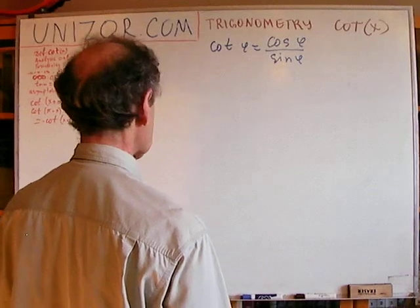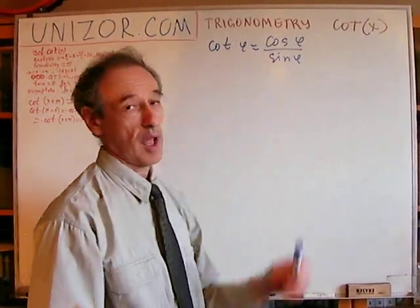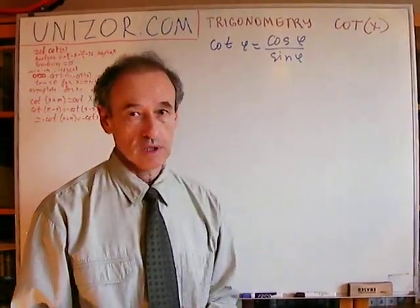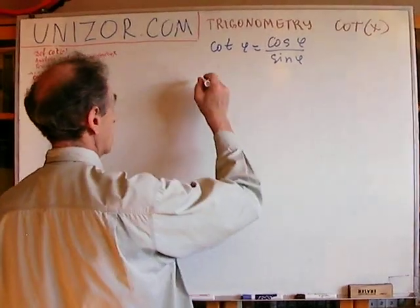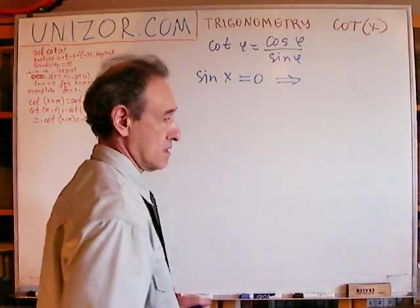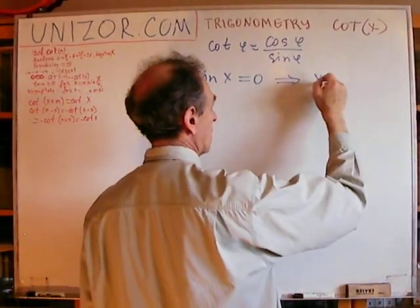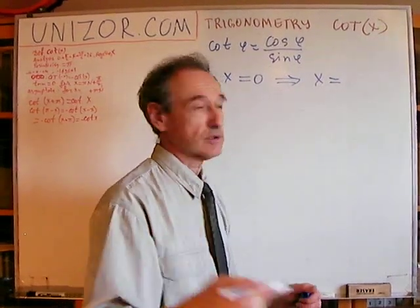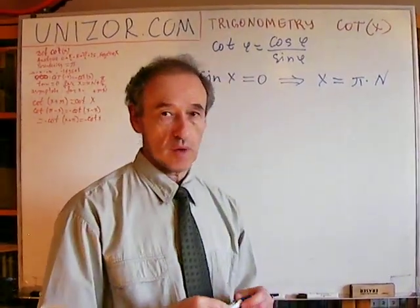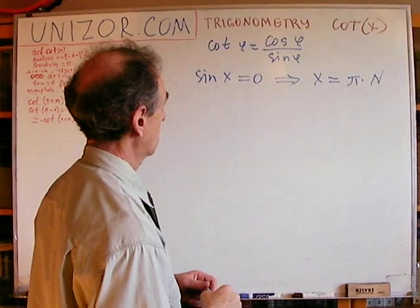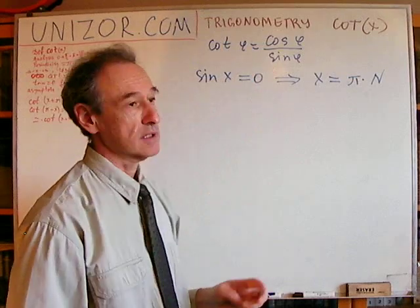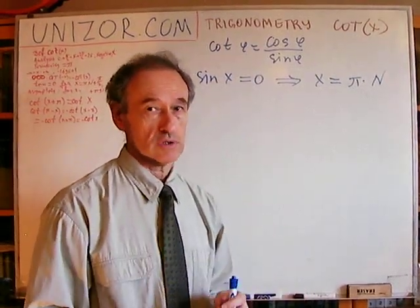Next, what strikes the eye is denominator, obviously, which means that the function is not defined where the denominator equals zero. Now, if sine of x equals zero, then x, if you remember, is zero, π, 2π, 3π, etc., so it's π times n, where n is any integer number, including zero and negative numbers as well. So, these are the points where our sine is equal to zero, and the cotangent is undefined.